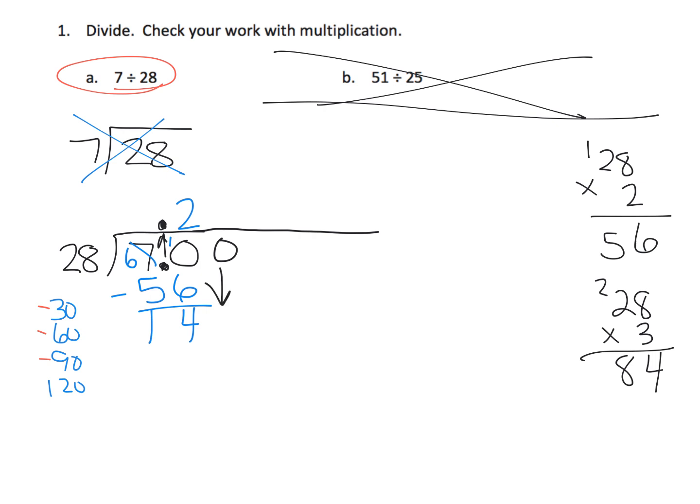So I'm going to do 28 times 3. And 3 times 8 is 24, carry the 2. 3 times 2 is 6 plus 2 more is 8. So that's 84. So 84 is too big. So yeah, 2 was the proper quotient. So that's 56 down here. We're going to get 14. And technically that would be 14 tenths as our leftover. So I'm going to extend my division a little bit. And I'm going to bring down that zero because now we have 140 hundredths divided amongst 28 groups.